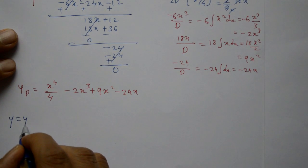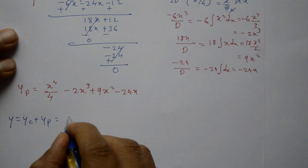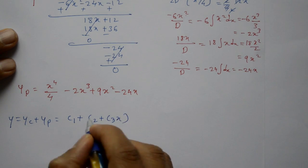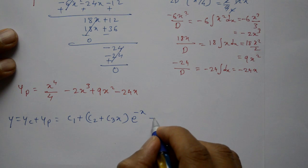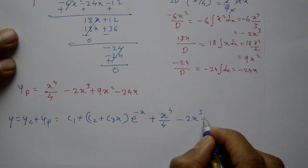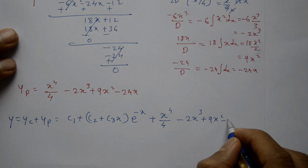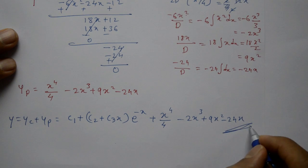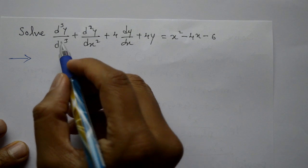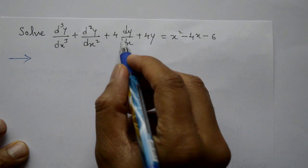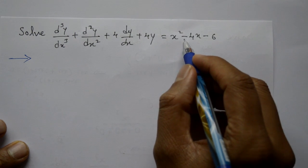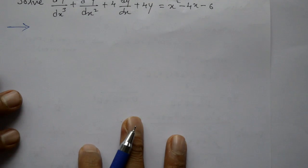The complete solution is y = Yc + Yp = c₁ + (c₂ + c₃x)e^(-x) + x⁴/4 - 2x³ + 9x² - 24x. Now Problem 2: solve d³y/dx³ + d²y/dx² + 4(dy/dx) + 4y = x² - 4x - 6. Find the complete solution.